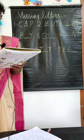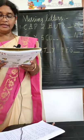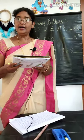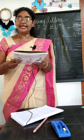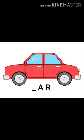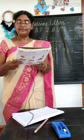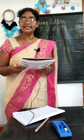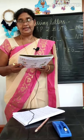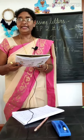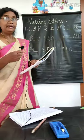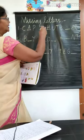Third one is dash-A-R. What is that? CAR. Very good. The missing letter is C. Write capital letter C.